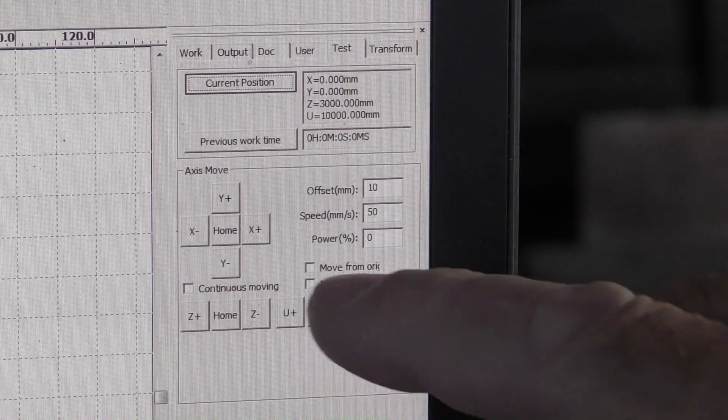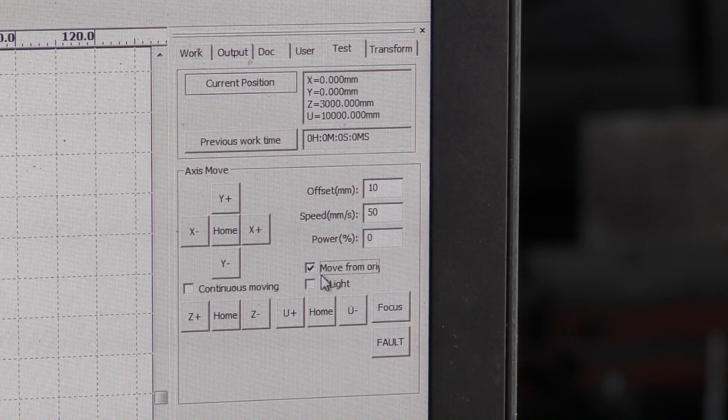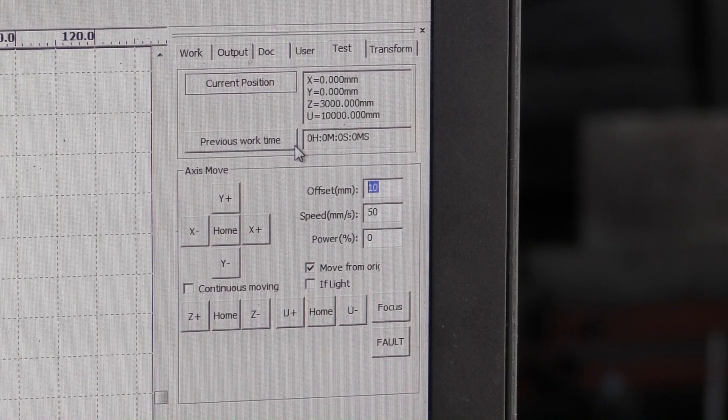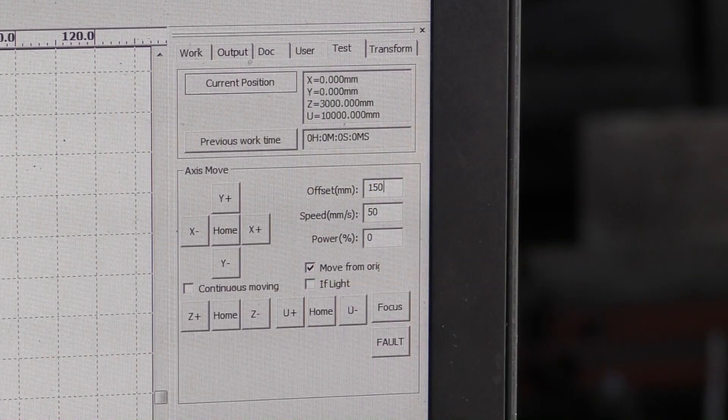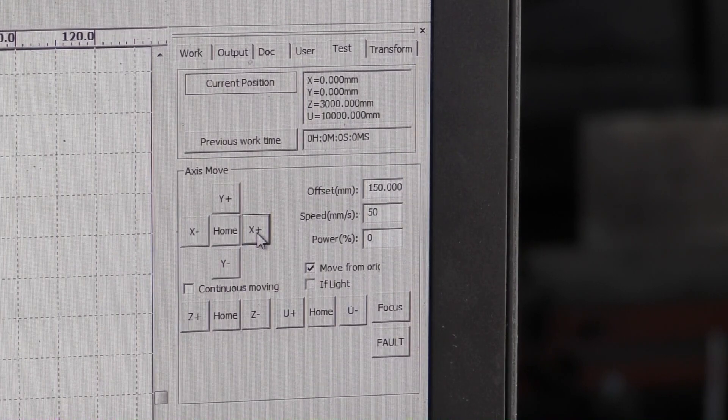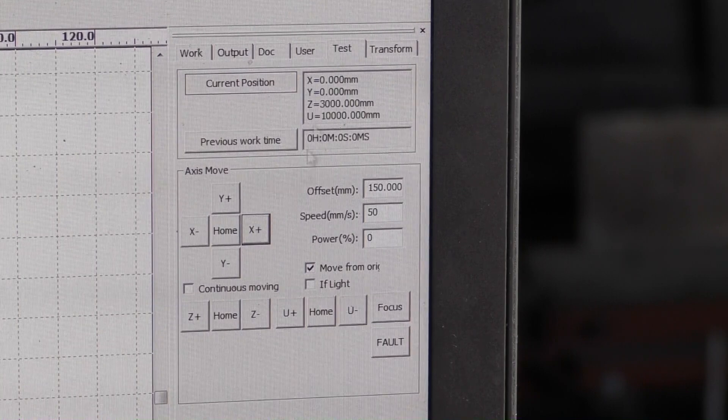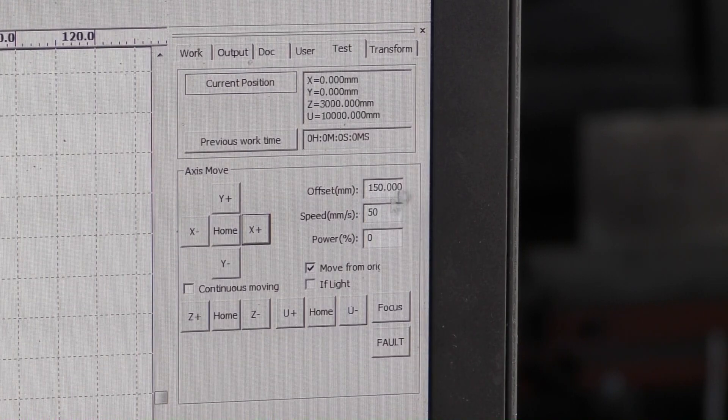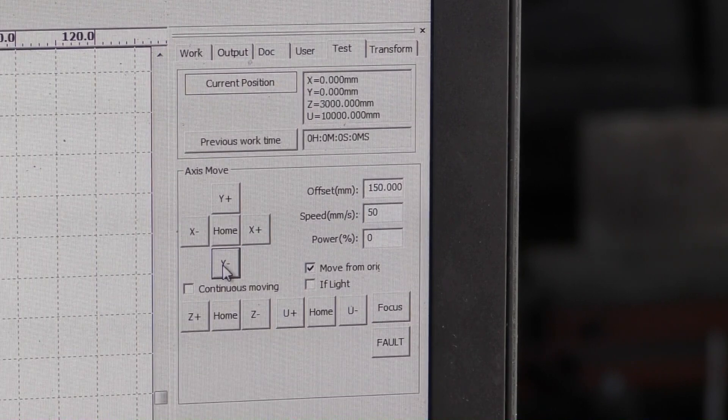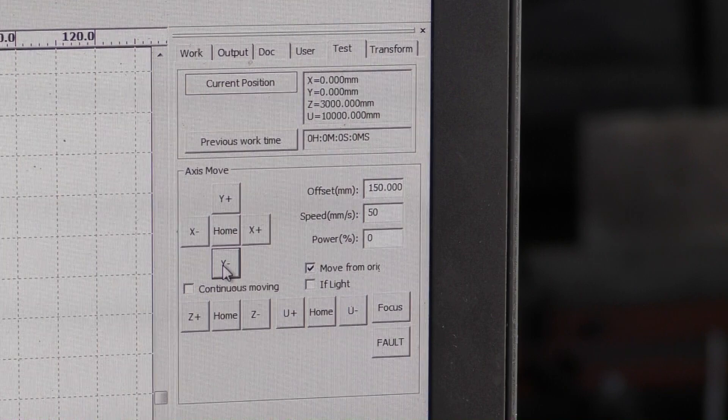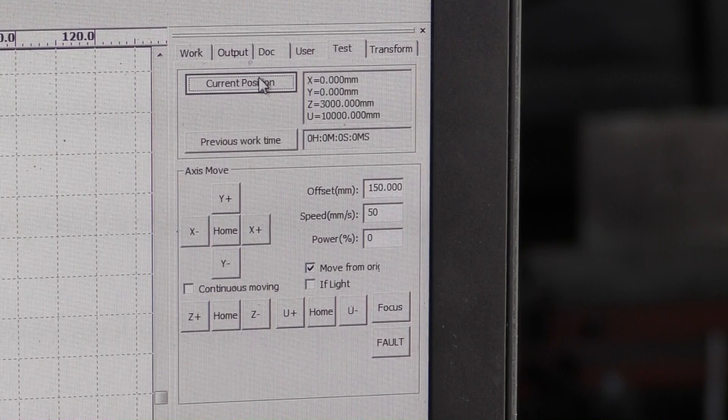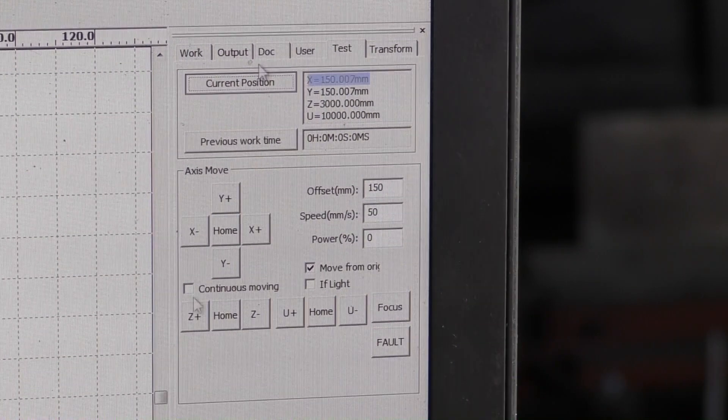Then I can get here the possibility if I tick this one, it allows me to move a certain position from the origin. So for example, if I want to move 150 millimeters in X, because I am at the origin already. So I can set the machine where I want. I can then do 150 in Y. And now the head has moved to 150, 150. And here it is 150, 150.